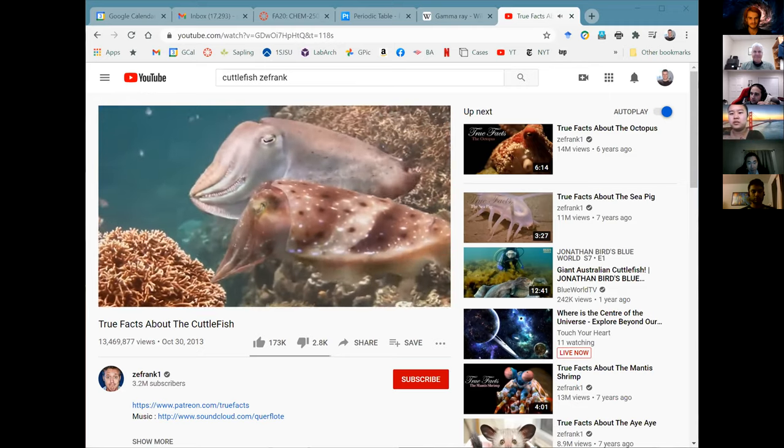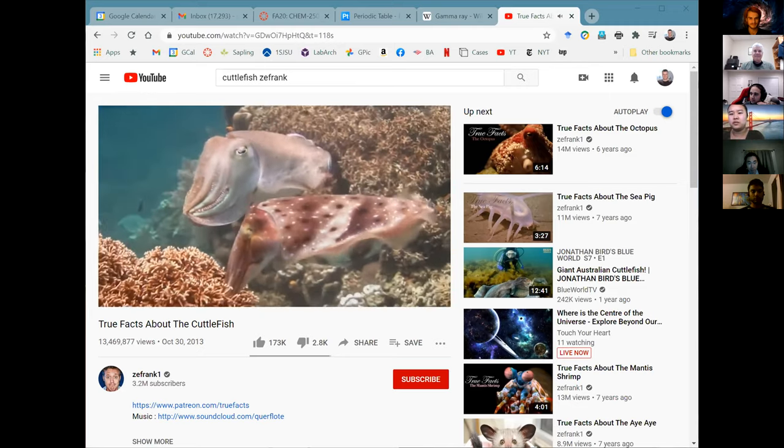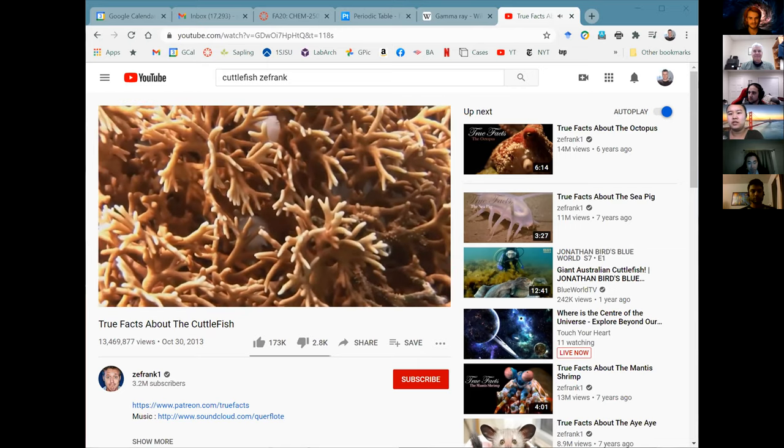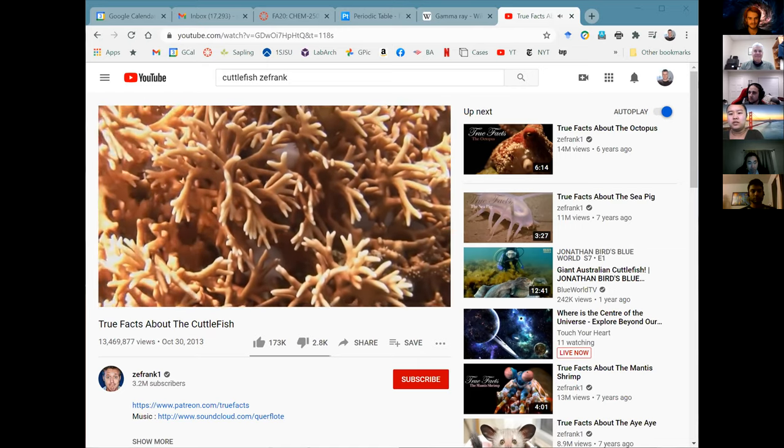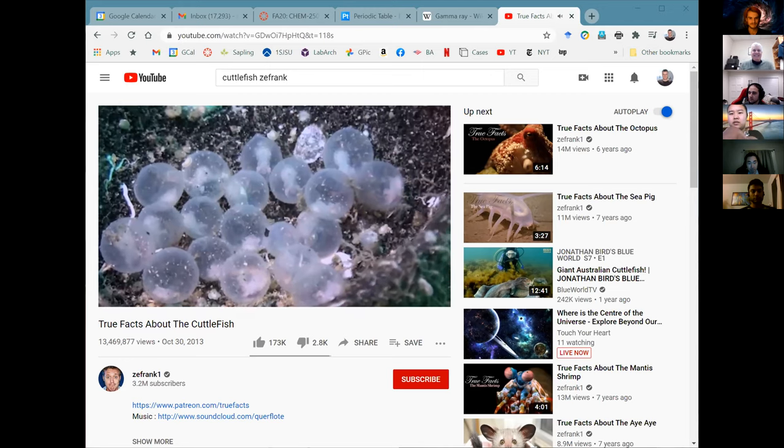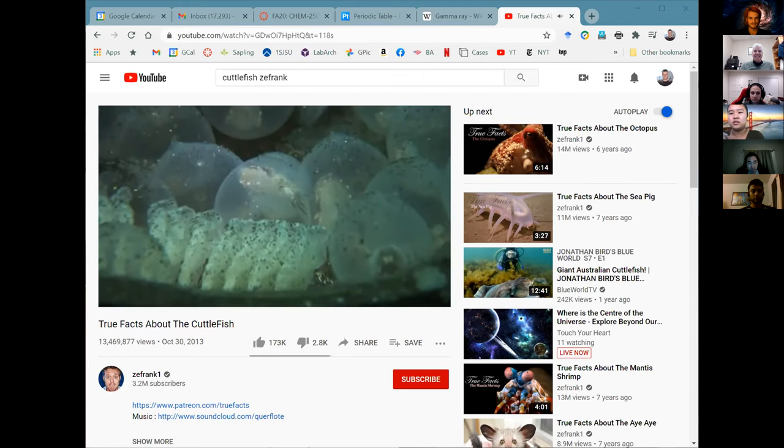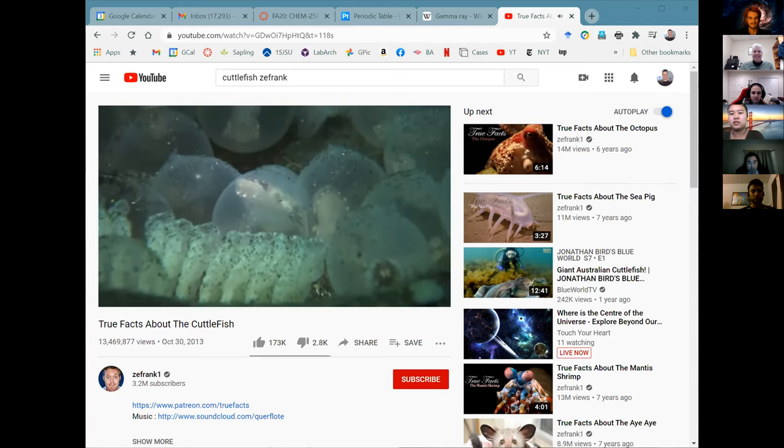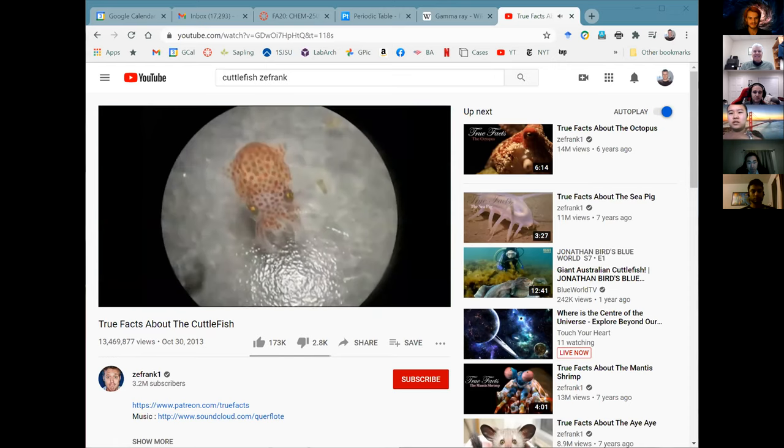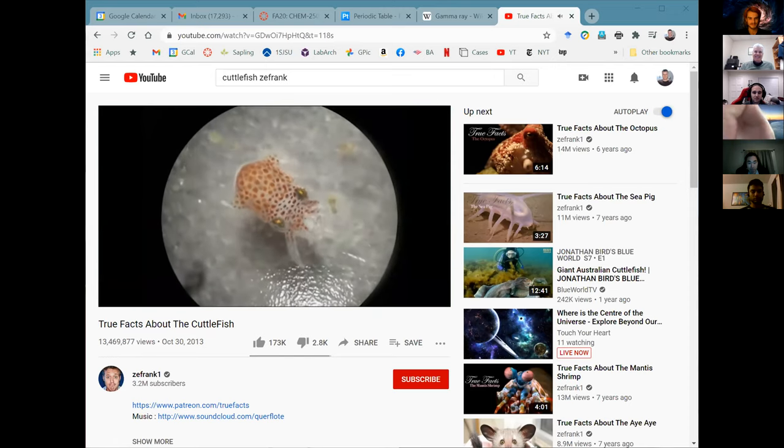After the female eggs are fertilized, she gingerly and lovingly puts her eggs in some random tree holding hold on the bottom of the ocean. The eggs are called sea grapes by people who like wine, and they are dotted by the couple until they hatch into the cutest little freaks in the universe.